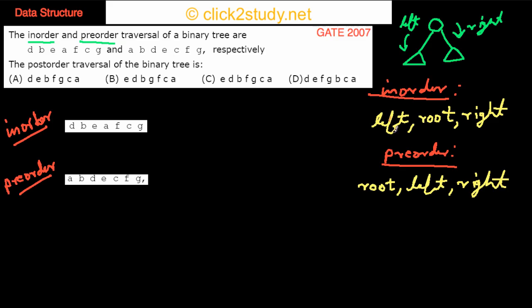In in-order the order is left, root, right. In pre-order the first element is the root. So what pre-order gives you is the root. And from in-order, once you identify the root, you can tell that this side is the left subtree and this side is the right subtree.